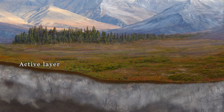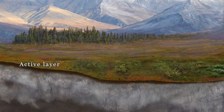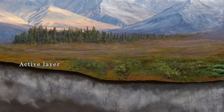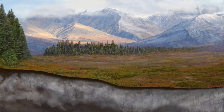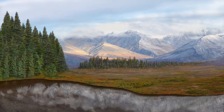Tundra is full of small plants like shrubs, sedges, and mosses, but not trees. Soil organic carbon accumulates in the active layer, but can become buried within and even beneath permafrost over time. The boreal forest is located just south of tundra and is the northernmost forested biome. It also has cold soils, but not all of it has permafrost.